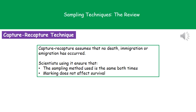When using the capture-recapture technique, we make a few assumptions: between samples, there has been no death, no immigration, and no emigration. We also need to ensure we use the exact same sampling method both times, and that marking the individuals doesn't affect their survival. For example, if using nail varnish on the back of a grasshopper, we must make sure it doesn't stick their legs to their back, as that would clearly affect their ability to survive.